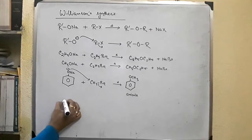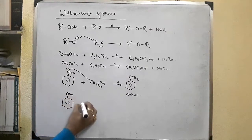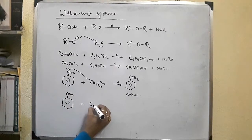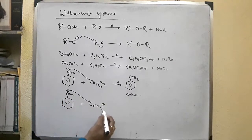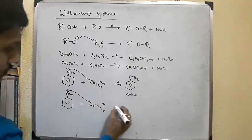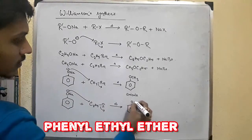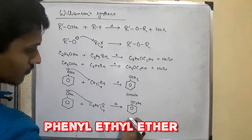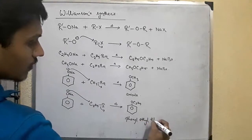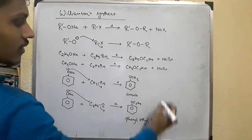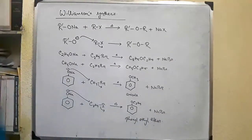Taking another example: sodium phenoxide plus C2H5I — ethyl iodide — the nucleophile attacks, the leaving group leaves, and we get phenyl ethyl ether, with sodium bromide as the byproduct.